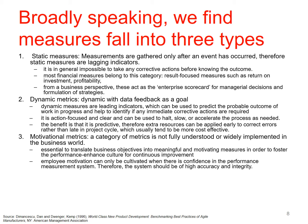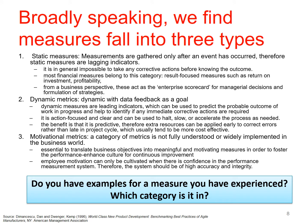The third category is motivational measures — one of the more poorly understood and less widely implemented in the business world. It's essential to translate business objectives into meaningful and motivating measures to enhance performance. Employee motivation can only be cultivated when there's confidence in performance measurement systems, so you want systems to be of high accuracy and integrity. Typically the motivational metric is pay with targets to hit, but often you'll find that the target you've been asked to hit is one you have absolutely no control over the business or its ability to meet.